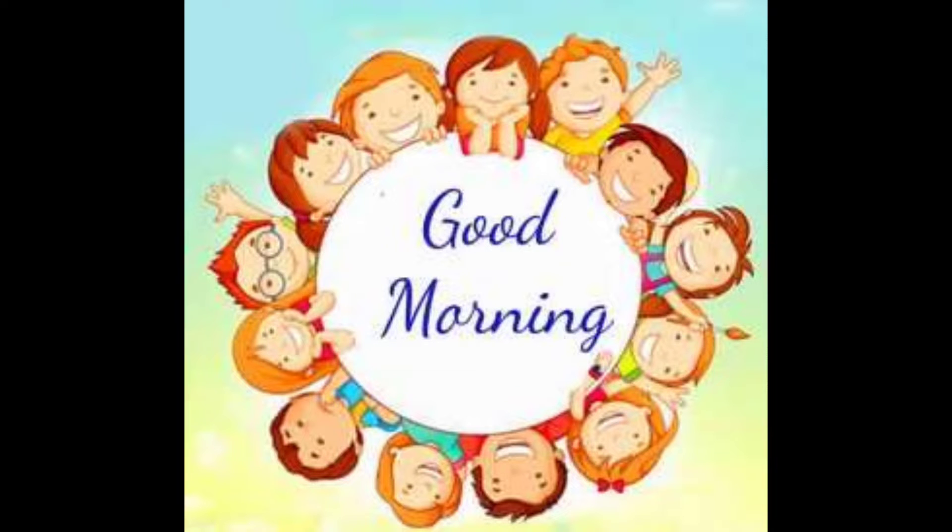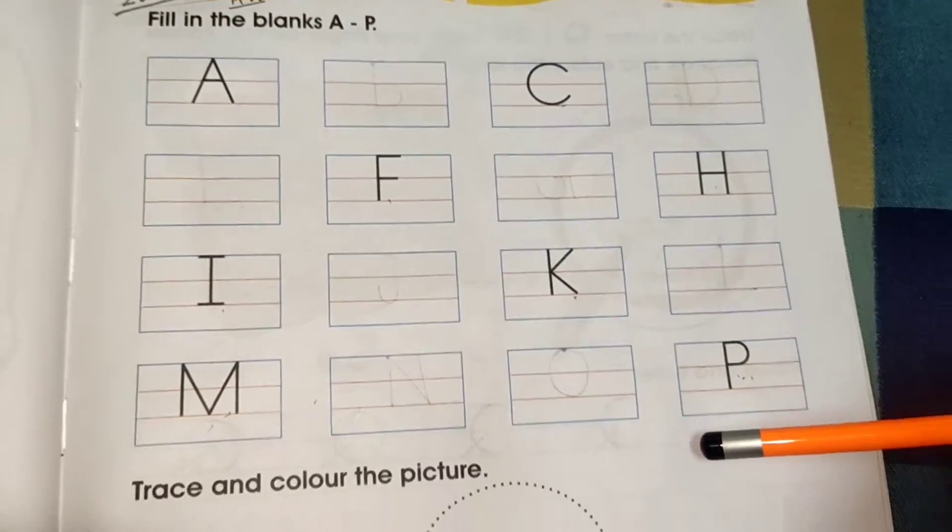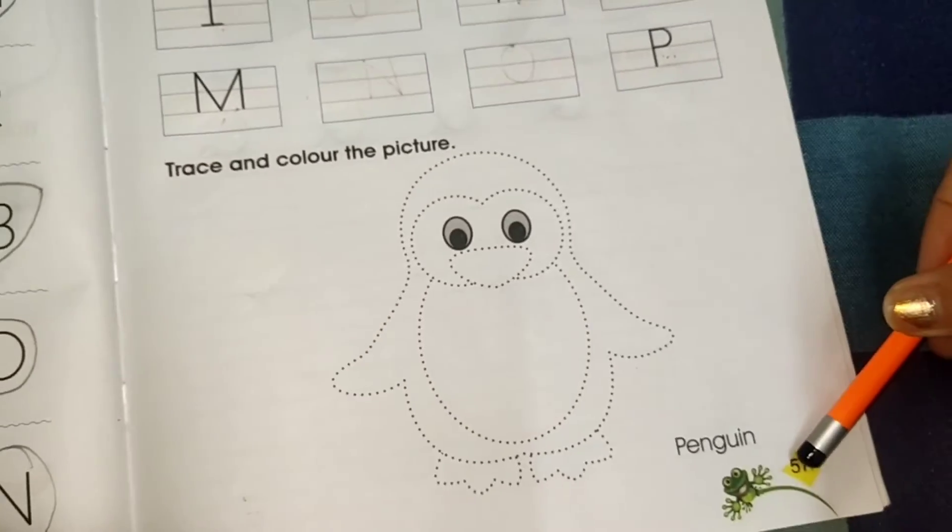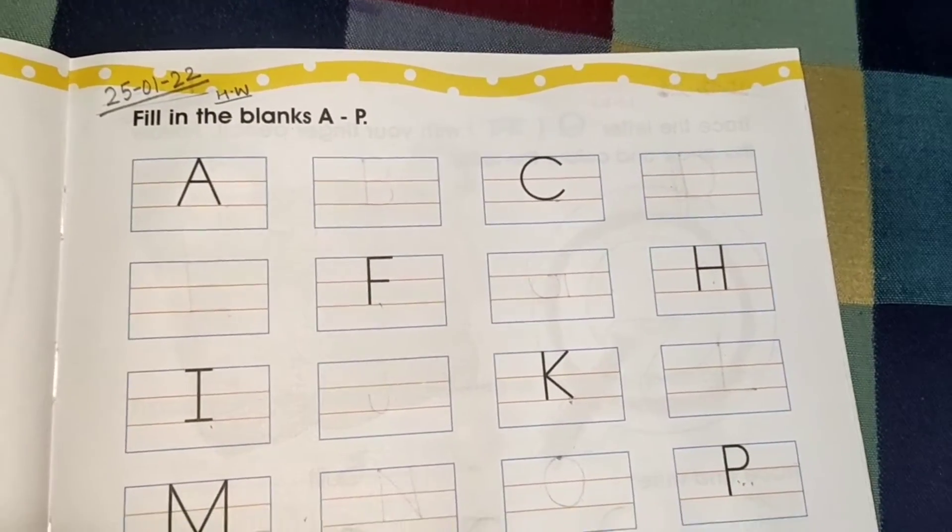Good morning everyone. Now it's activity time. Open your English textbook page number 57. Today we will do the fill in the blanks A to P.